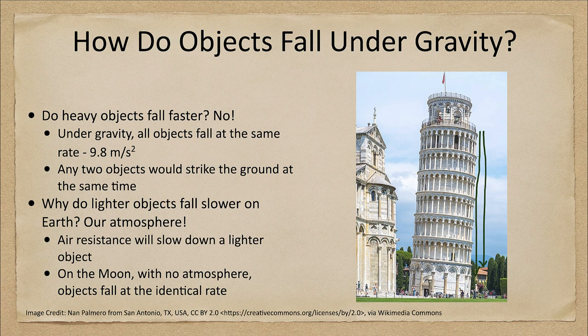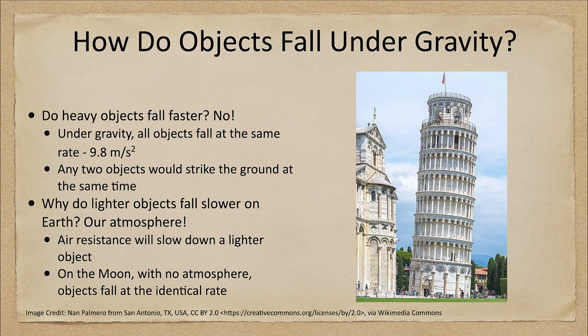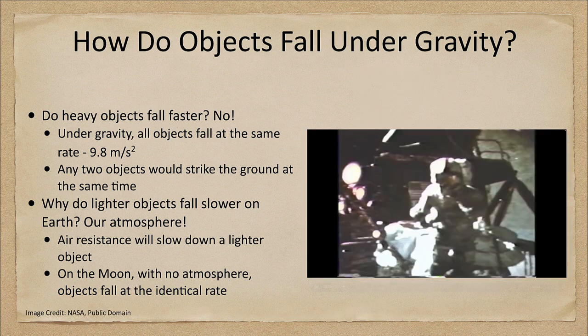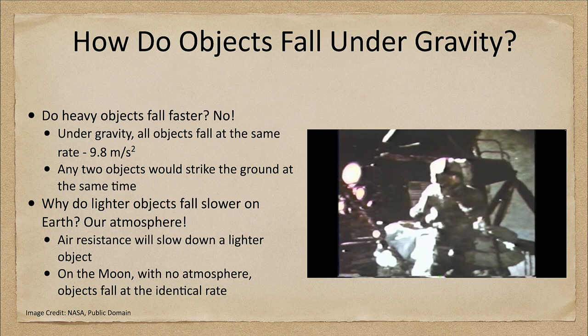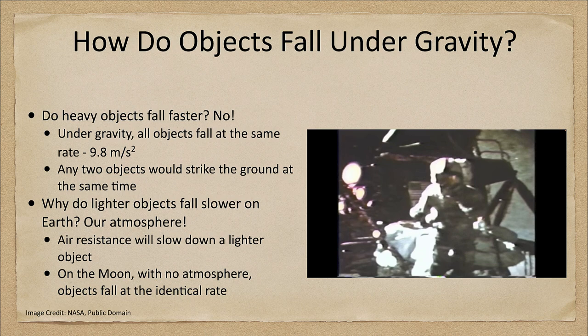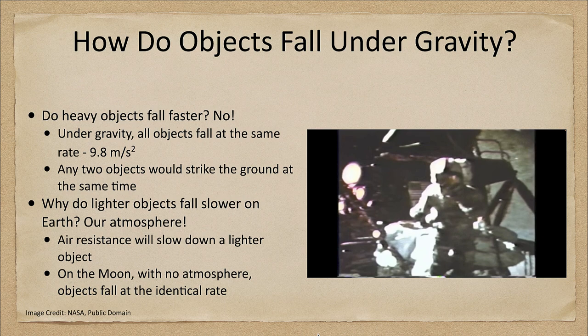So how can we test this? Well here on Earth we could do it in a vacuum chamber and see how objects fall, but we can also do this experiment on the moon. This was done by the Apollo 15 astronauts, and we can go ahead here and watch the clip showing when they dropped a hammer and feather at the same time on the surface of our moon.